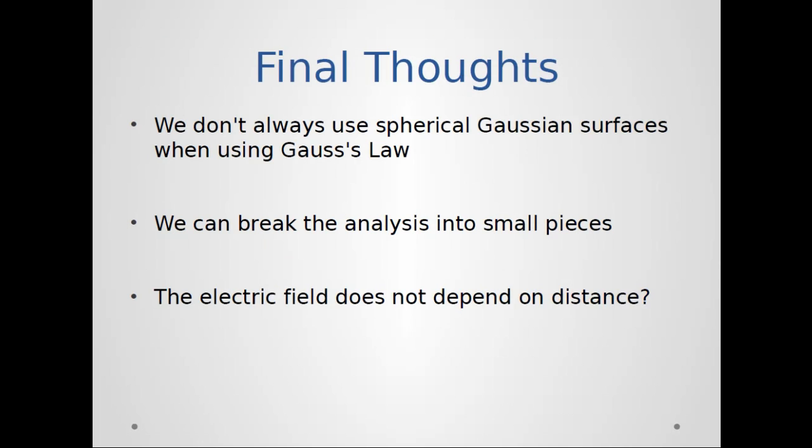So first things first, we don't always have to use spherical Gaussian surfaces when using Gauss's law. Here we used a cylinder and it worked very well. In fact, if we tried to use a sphere here, we would have run into a lot of problems because a sphere just doesn't fit the type of symmetry in this problem. We can break the analysis into tiny pieces - that's what we did by looking at the top, the bottom, and the sides of the cylinder.